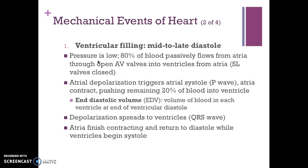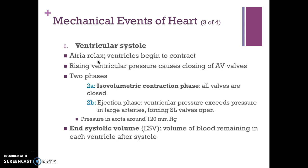Depolarization spreads to the ventricles, creating the QRS wave. The atria finish contracting and return to diastole while the ventricles begin systole. The second part of the cardiac cycle is ventricular systole — when the atria relax and the ventricles begin to contract. Rising ventricular pressure causes the AV valves to close. There are two phases: first, the isovolumetric contraction phase, where all valves are closed.